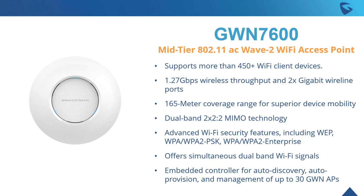Our GWN 76000 is our mid-tier 802.11ac Wave 2 Wi-Fi access point. It supports more than 450 Wi-Fi clients. Compared to the GWN 7610, it has a bit less throughput at 1.27 gigabit per second and a 165-meter coverage range for superior device mobility. It features dual-band 2x2 MIMO technology, advanced Wi-Fi security, and simultaneous dual-band Wi-Fi signals. The embedded controller is definitely a really big thing here — we'll be touching on that a bit later.